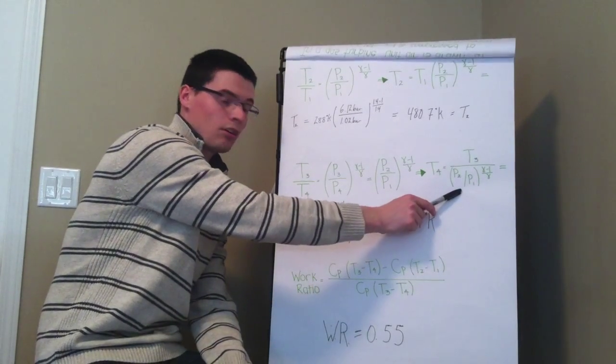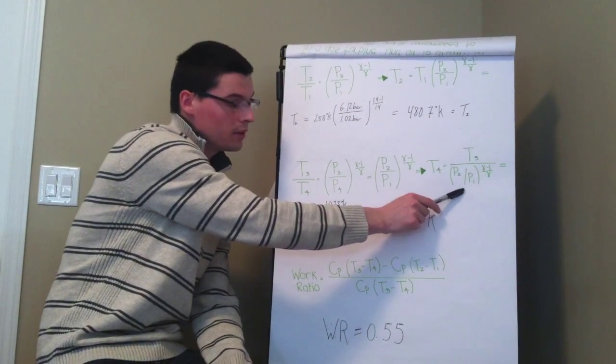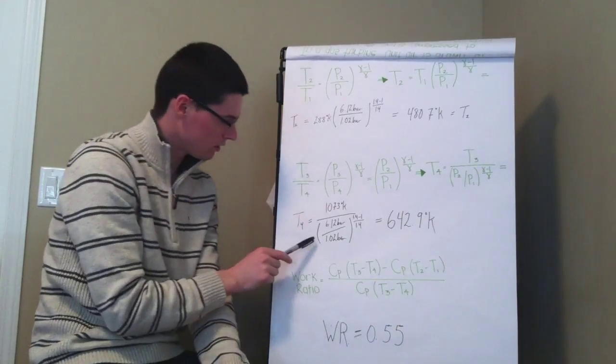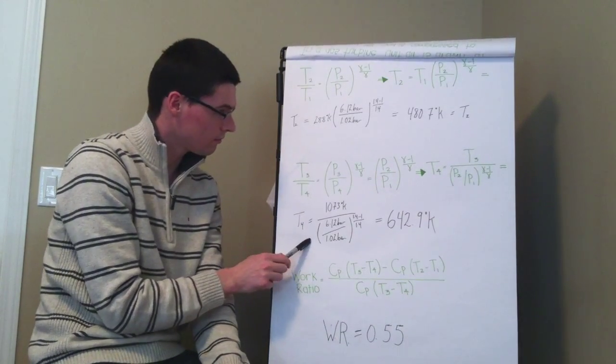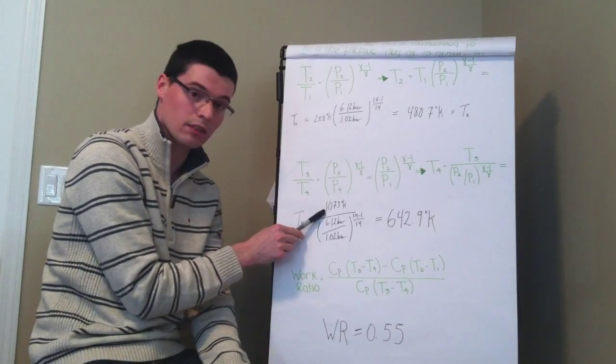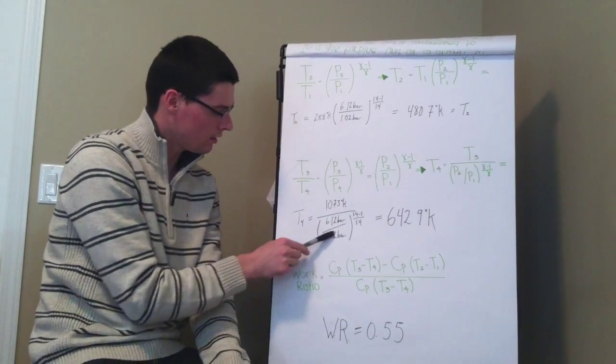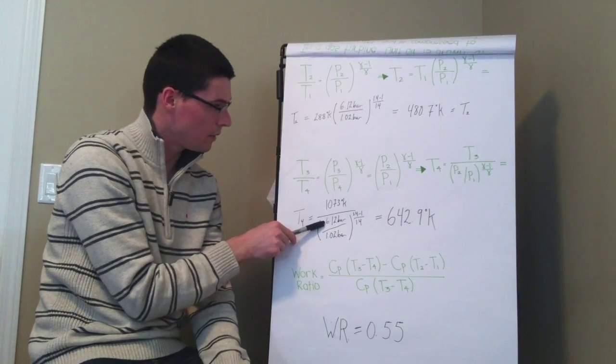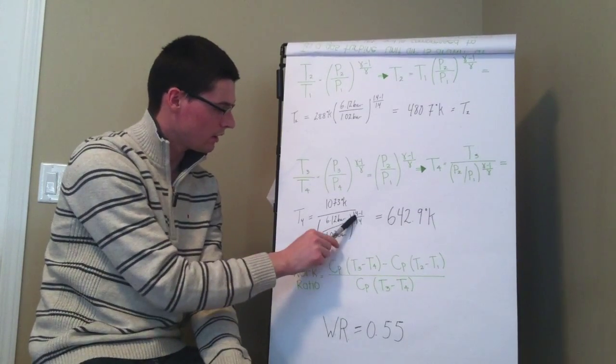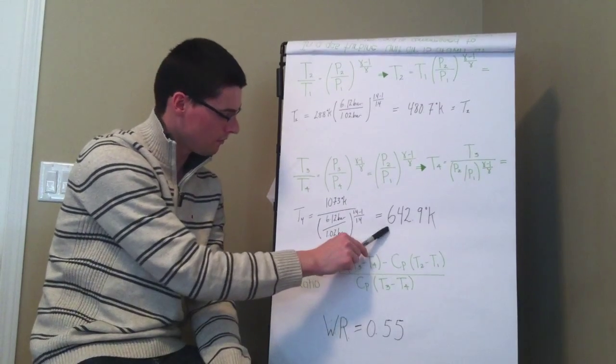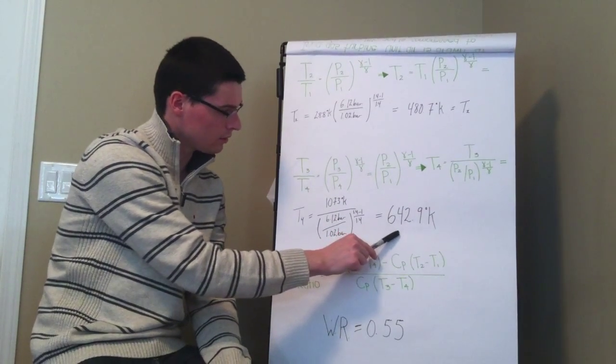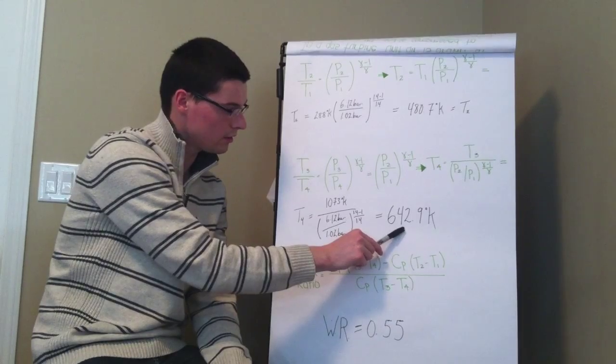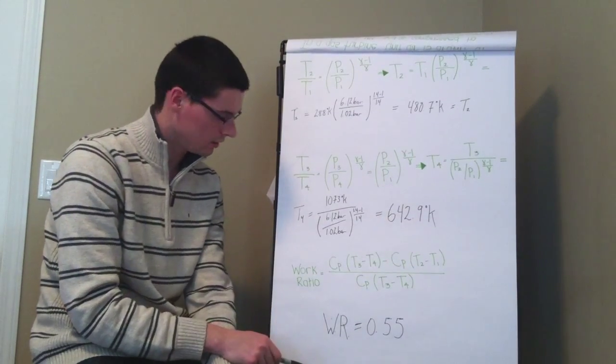And then we can very easily solve for T4 using this relationship. And so we have it worked out over here, where we have T3, 1073 degrees Kelvin divided by the ratio of P2 divided by P1 to the gamma minus one over gamma. And then we get T4 equals to about 642.9 degrees Kelvin.